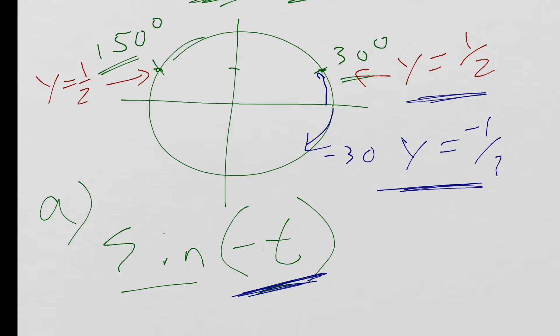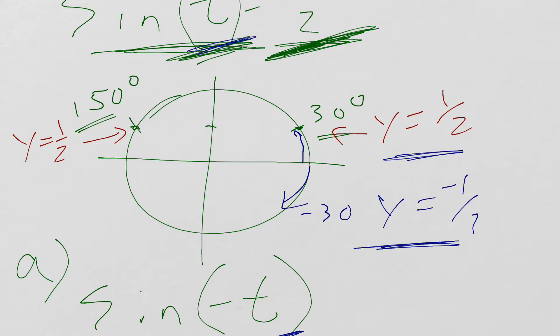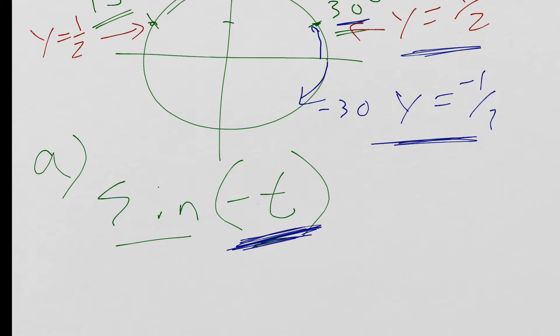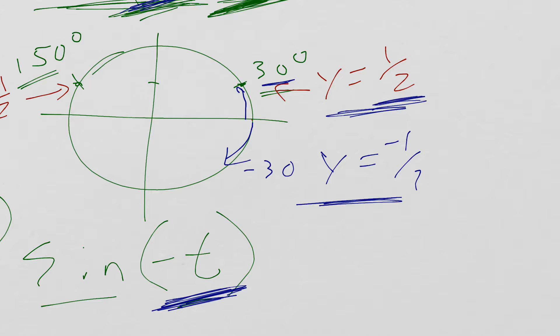So in this case, if this angle was 30 degrees and I changed it to negative 30 degrees, my Y value would go from 1 half to negative 1 half.